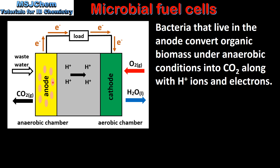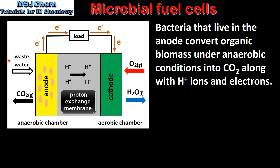Here we can see the bacteria that live in the anode. These bacteria oxidize fuel into carbon dioxide, electrons that flow in an external circuit, and hydrogen ions that pass through a proton exchange membrane. At the cathode, oxygen is reduced to form water. Possible fuel sources include carbohydrates or substrates present in waste water.